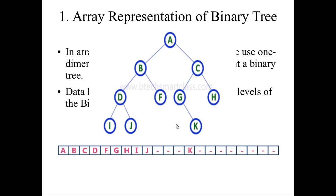After that, F does not have any children, so we have to mention left and right as null. G does not have any left child, so the left child is null, but it has right child K. H does not have any left or right child, so both are taken as null. After this, if you check for I, there is no left child and no right child — that is at level 4.